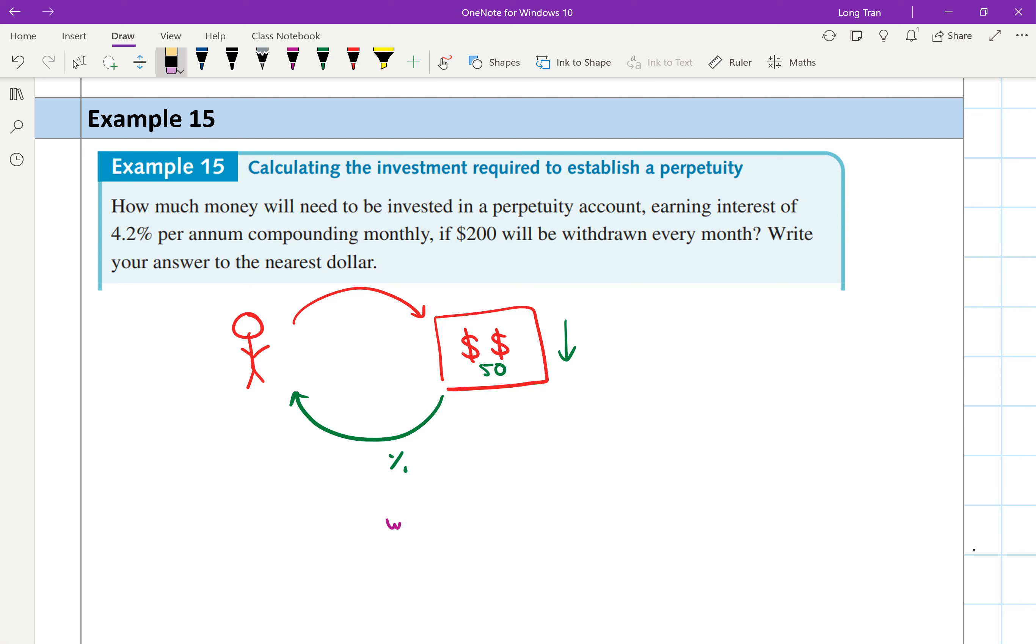So in a perpetuity you don't get the withdrawal, but it means that this will go on indefinitely because your $50 is there and they will keep paying interest as long as you're happy to leave your $50 with them. That's the idea. So what's this question asking?